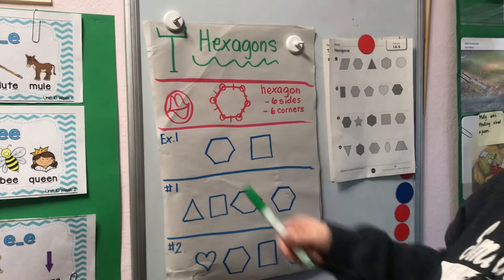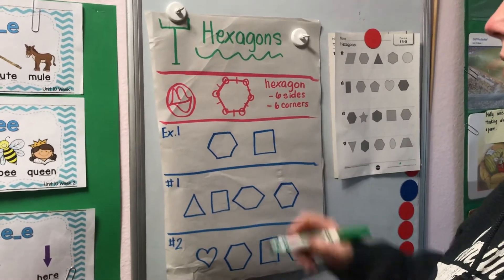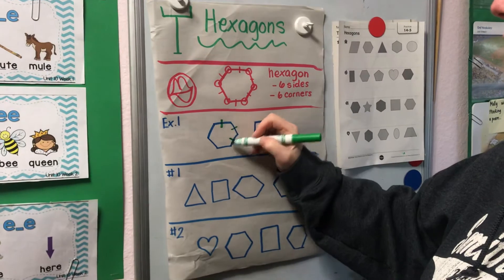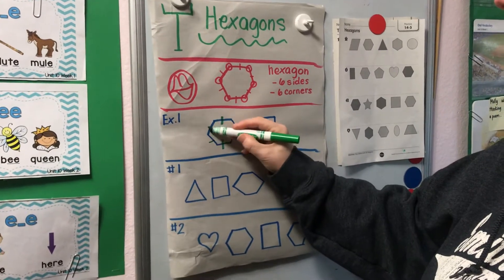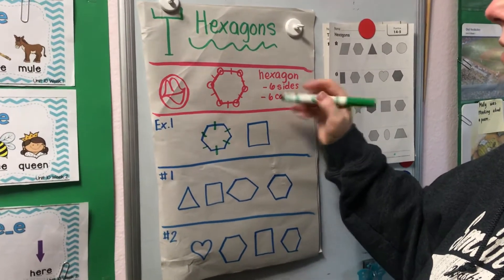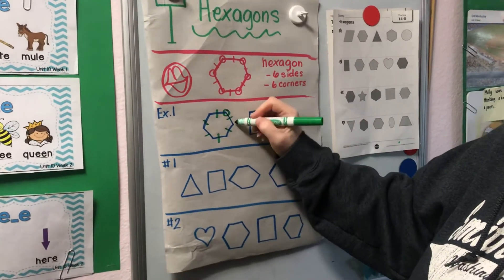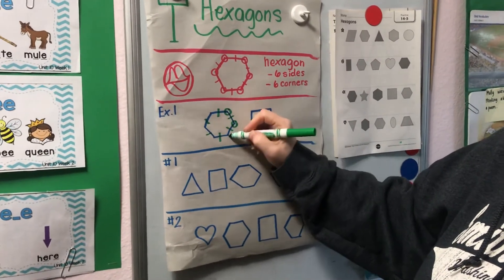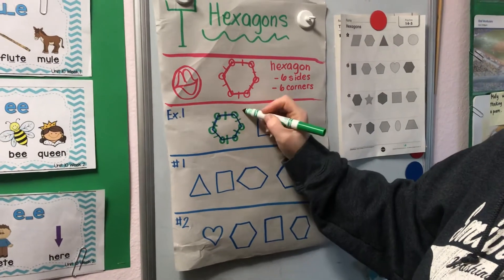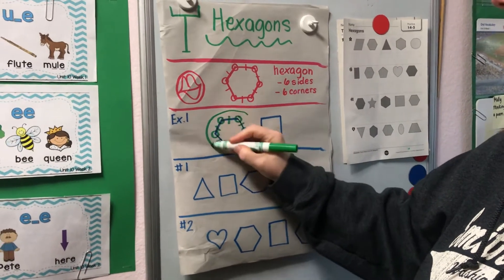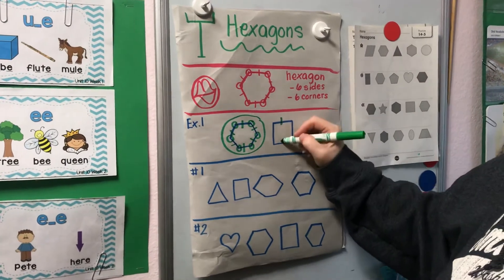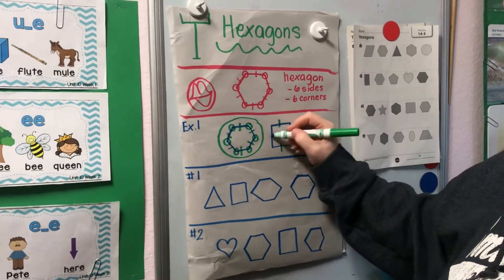Let's look at two shapes. Which one is a hexagon? One, two, three, four, five, six — does it have six sides? Yes! What about corners? One, two, three, four, five, six. Yes, this is a hexagon. We're going to circle it. We know that four sides is a square.